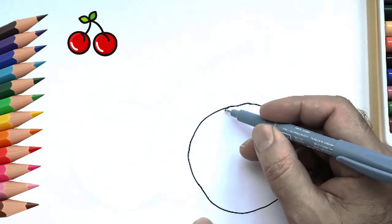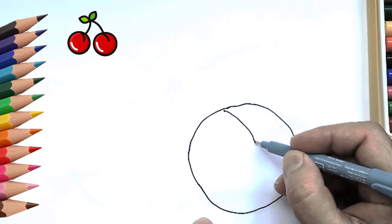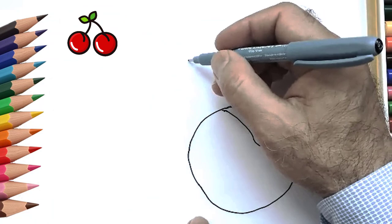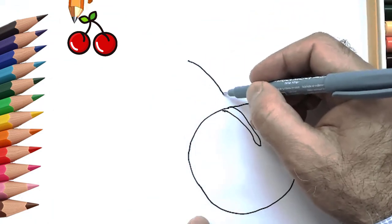Next, we draw another similar circle. This will be the second cherry. Now draw the tails. First, draw the tail of one cherry.